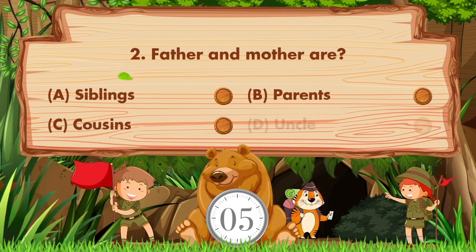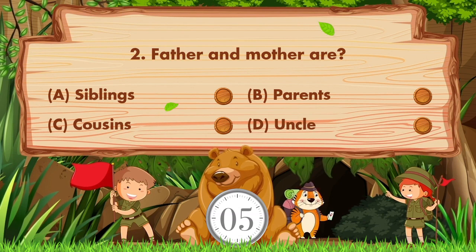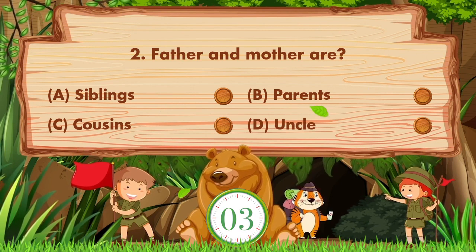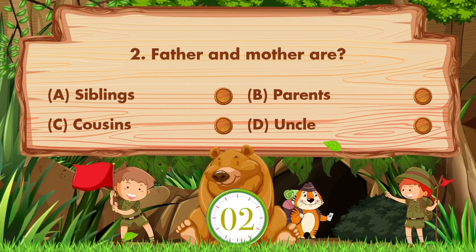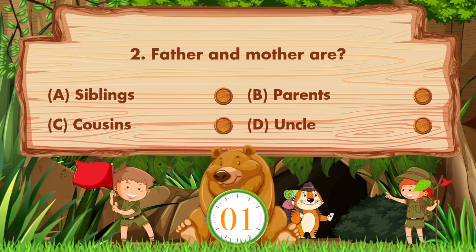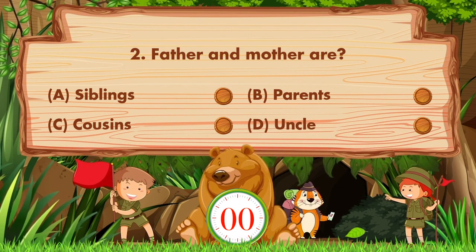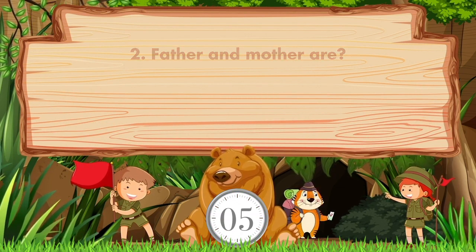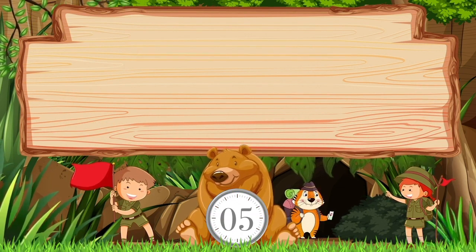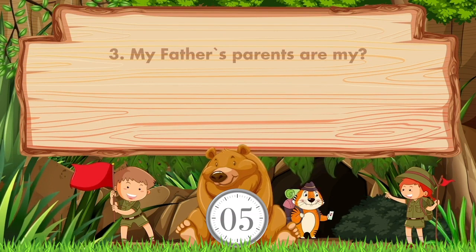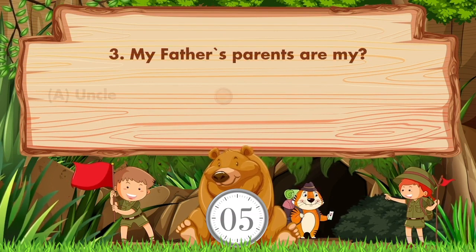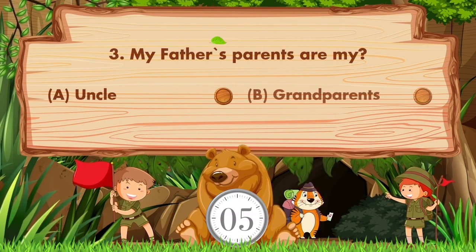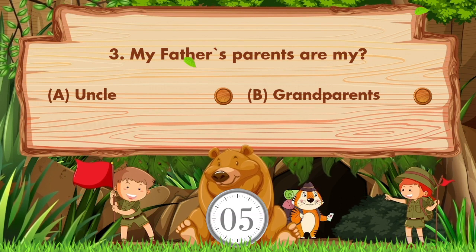Father and mother — option A is siblings, B parents, C cousins, D uncle. Answer is option B: parents.